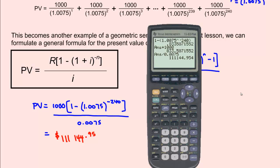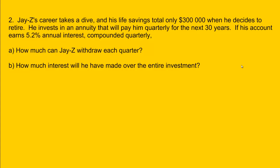Alright, we'll look at one more example. Example two: Jay-Z's career takes a dive, and his life savings total only $300,000 when he decides to retire. He invests it in an annuity that will pay him quarterly for the next 30 years. If his account earns 5.2% annual interest compounded quarterly, we need to figure out how much can Jay-Z withdraw each quarter and how much interest will he have made over the entire investment.